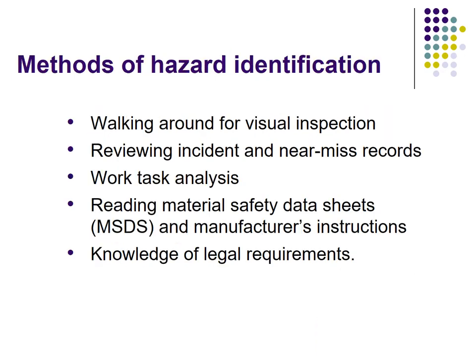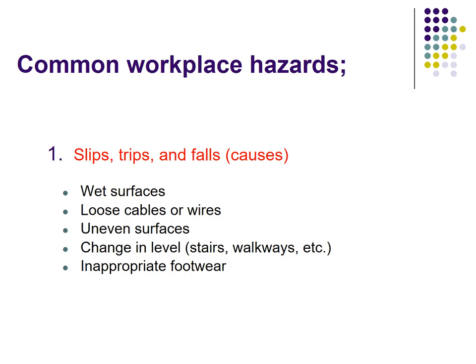Methods of hazard identification include: walking around for visual inspection, reviewing incident and near-miss records, work task analysis, reading material safety data sheets (MSDS) and manufacturer instructions, and knowledge of legal requirements. There are various types of common workplace hazards which we are going to learn in this video.